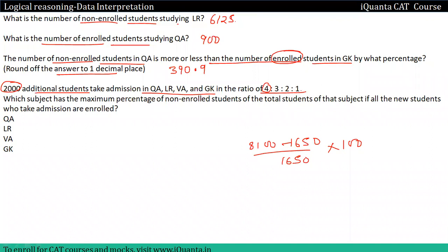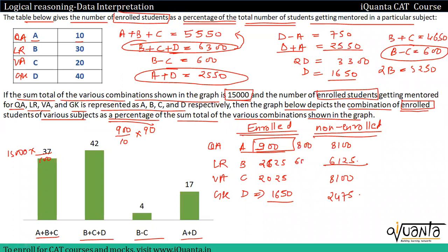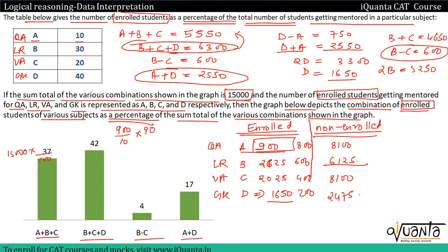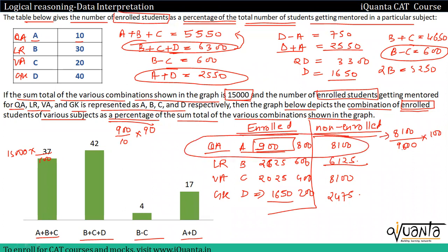So we have 400, 36, 600, 24, 400, and 12 hundred. Here 600, 400, 200. The second question asks: which subject has the maximum percentage of non-enrolled students of the total students of that subject, if all new students who take admissions are enrolled? We need to get the total of 9000, 9800, and 9 enrolled. The maximum value is 8100 divided by 9800 into 100, so the maximum percentage is calculated here.